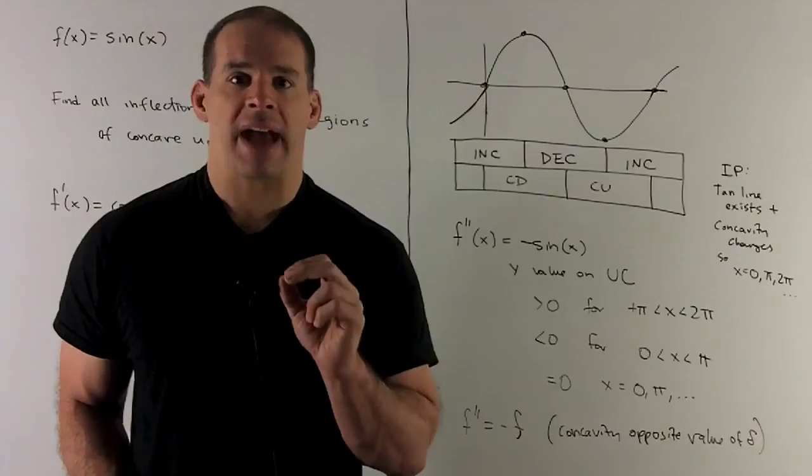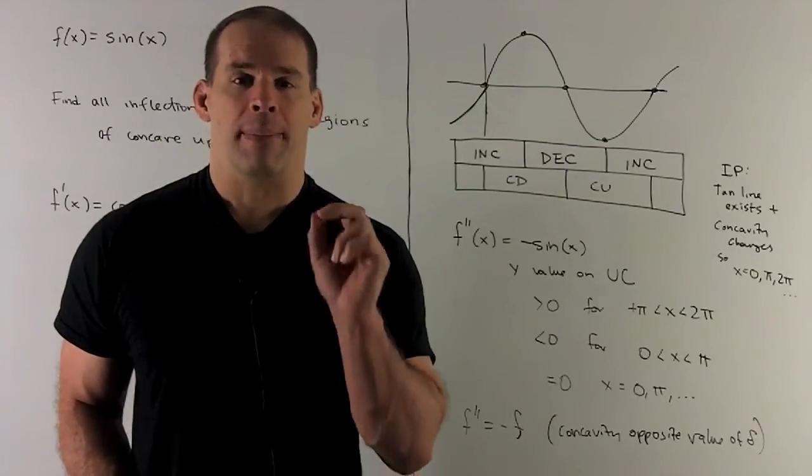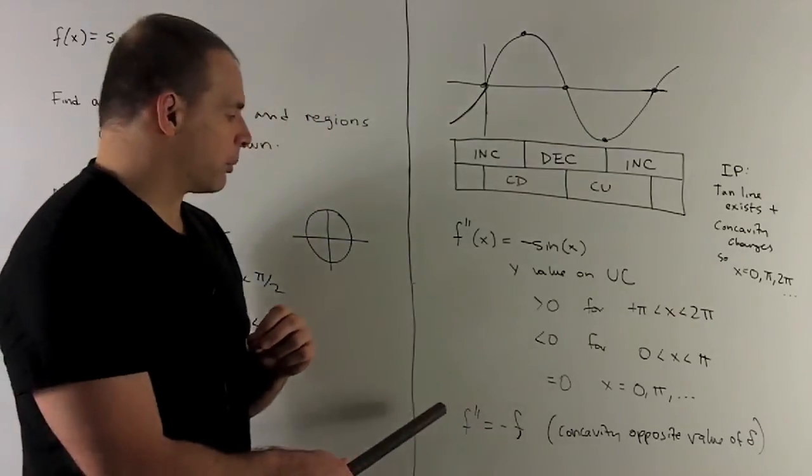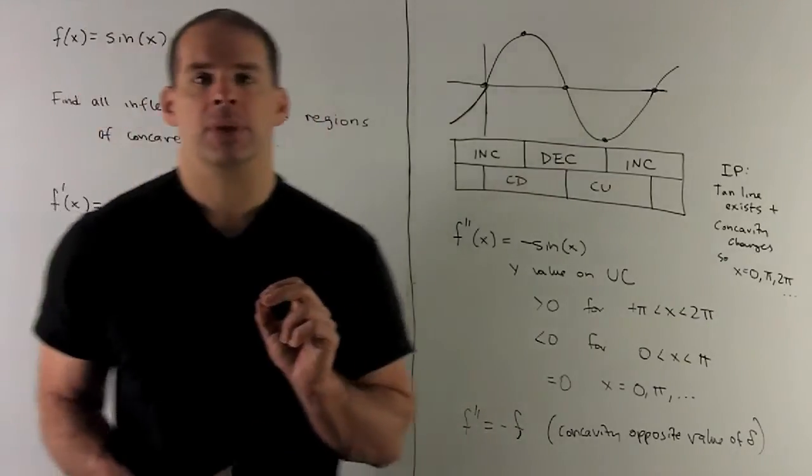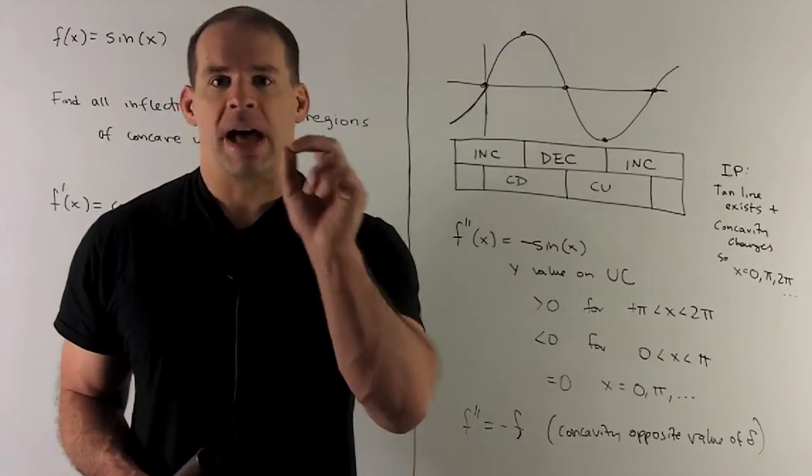One last interesting fact: if I take the second derivative, it's equal to minus the original function. So f double prime equals minus f. So what does this mean? Well,